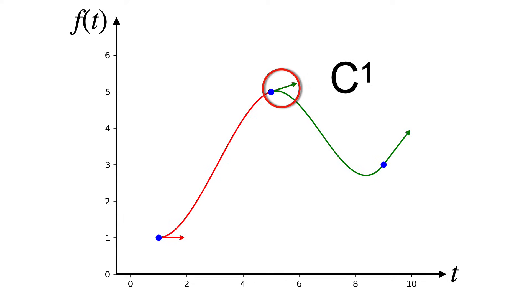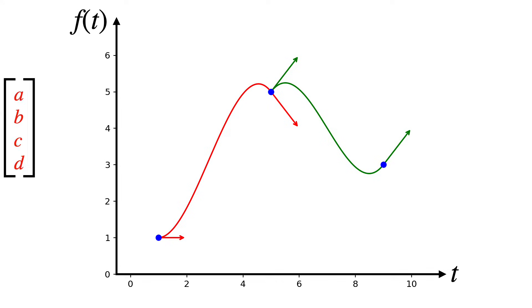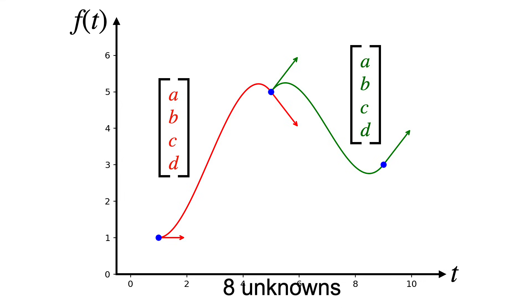But first, let's take stock of where we are. Let's go back to our two curves. We have four unknowns for the red curve and four for the green. So we need eight constraints or equations total to solve for the eight unknowns.